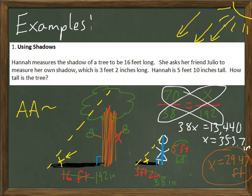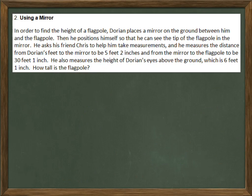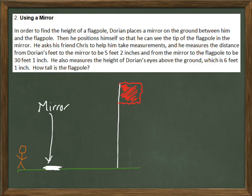Let's look at one more example. Another way to find the height of an object you wouldn't be able to measure is to use a mirror. So let's look at this example. In order to find the height of a flagpole, Dorian places a mirror on the ground between him and the flagpole. So here's a flagpole, there's a mirror, and there's our friend Dorian. He positions himself so that he can see the tip of the flagpole in the mirror.